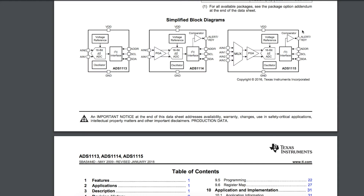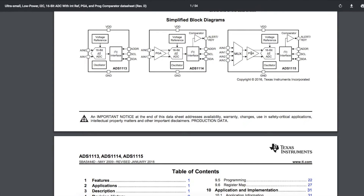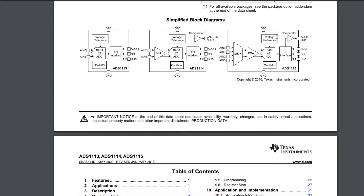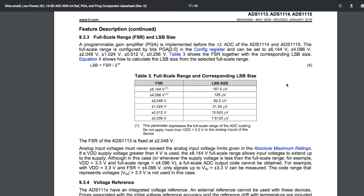Here's what the ADC looks like. We have our four analog inputs, we have our amplifier, it has a built-in voltage reference so we don't need to provide anything else, and then we set our address with this pin and communicate over I2C.